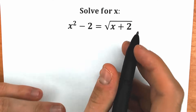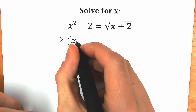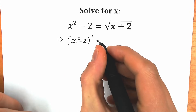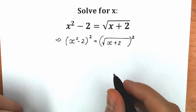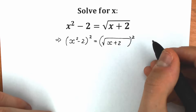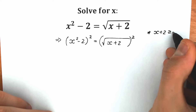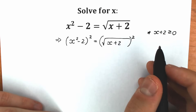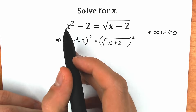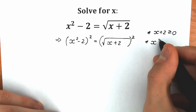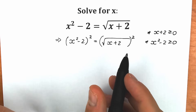Let's square both sides. But a lot of students forget this very important moment: the expression inside the square root sign needs to be positive, so x plus 2 must be greater than or equal to 0. The second extremely important moment: the expression on the left side also needs to be positive, because a square root cannot be negative. So x squared minus 2 must be positive as well. All roots we find will be checked against these two inequalities, because some roots we may need to reject.